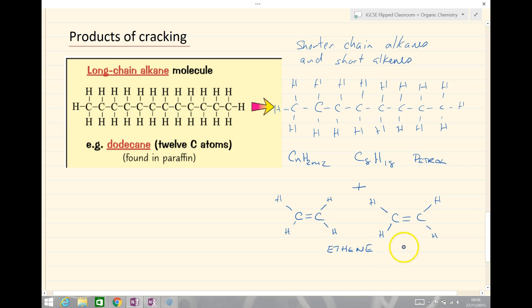These have both got the formula C2H4. So these are alkenes. And if we now add up the total number of carbons, we have C8H18 plus C2H4 plus C2H4, totaling C12H26.